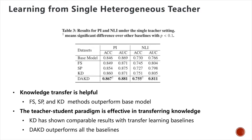We compare our DA-KD with these methods on the single heterogeneous teacher setting. We have these observations. First, knowledge transferring is very helpful because regardless of how the knowledge is transferred, all these methods — FS, SP, and KD — all outperform the base model without knowledge transferring. On all the datasets, our method DA-KD consistently outperforms all the baselines by a large margin, especially on the AUC metric, which shows the effectiveness of the teacher-student paradigm on transferring knowledge with domain-aware expertise. Unlike vanilla KD, our proposed method is better at adapting information from a heterogeneous source domain to help model learning in the target domain.